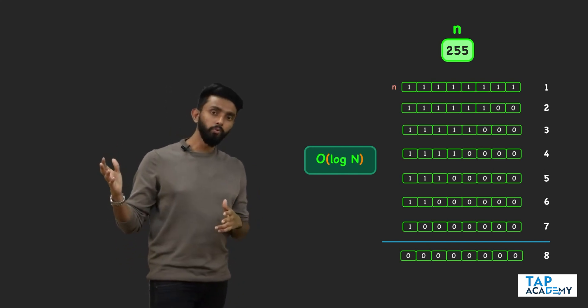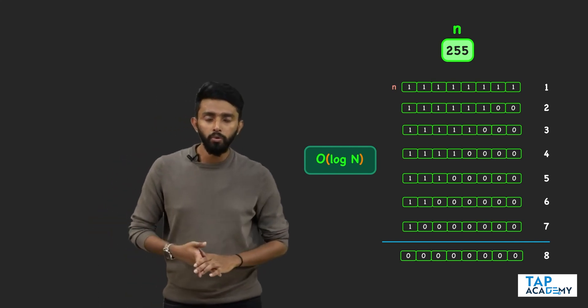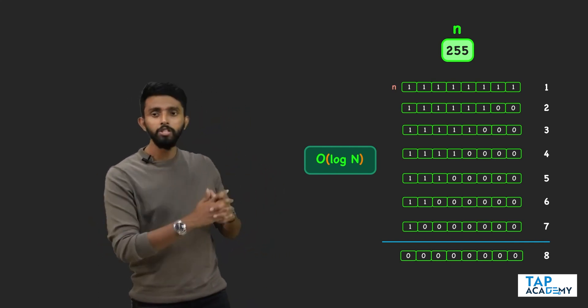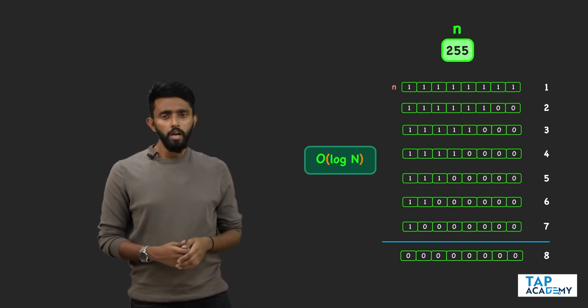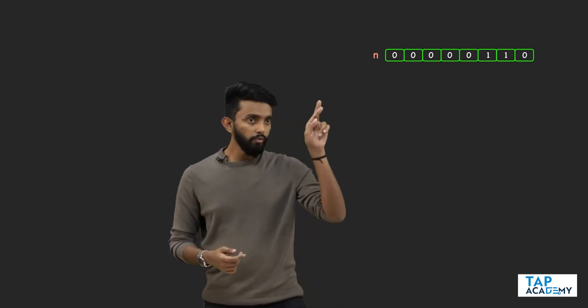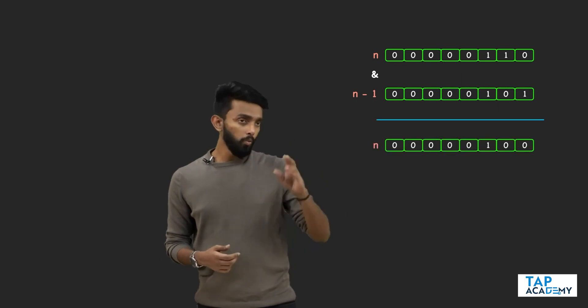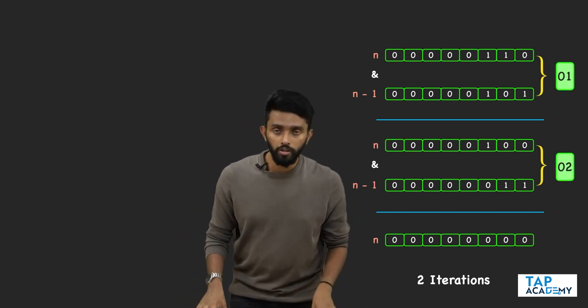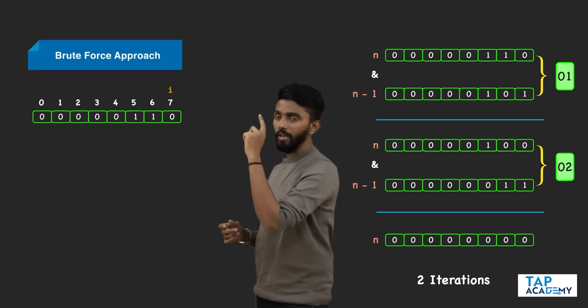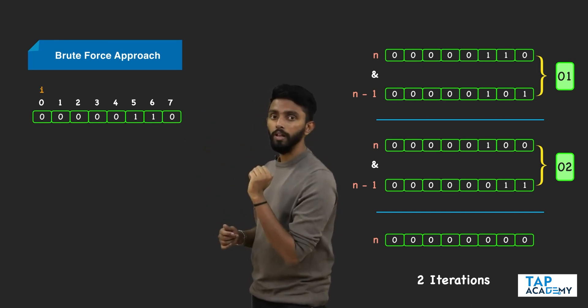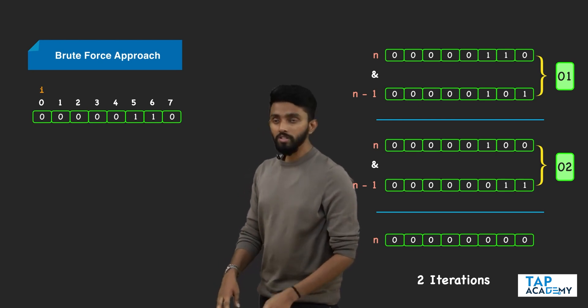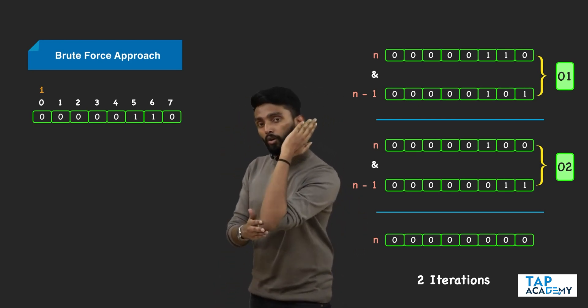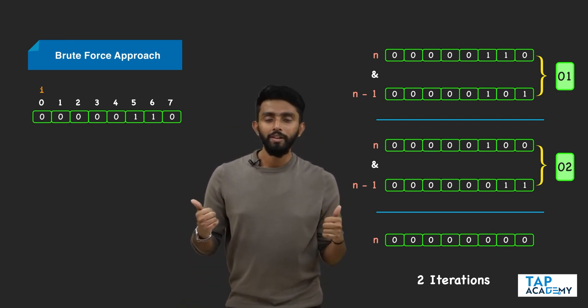You may say the previous brute force approach was also O(log n) and this is also O(log n), so this is really not efficient. No — that is the wrong way to analyze. This is more efficient. Maybe in the worst case both will take O(log n), but for other cases consider this: if the binary number has only two ones, the first n AND n-1 unsets one bit, the next makes everything zero — only two iterations. But in brute force, you start from the last bit and go to the first bit irrespective of whether there are set bits or not. Even though there are only two set bits, it still goes through all of the bits. So this optimized approach is more efficient.